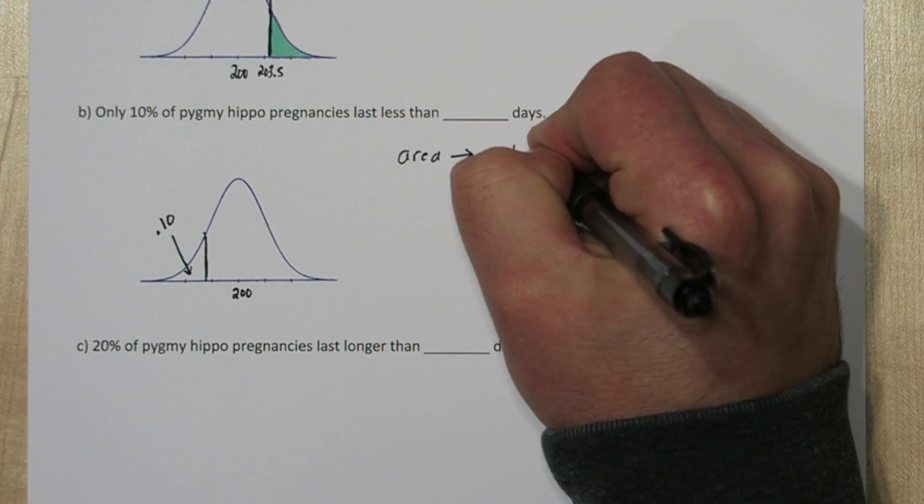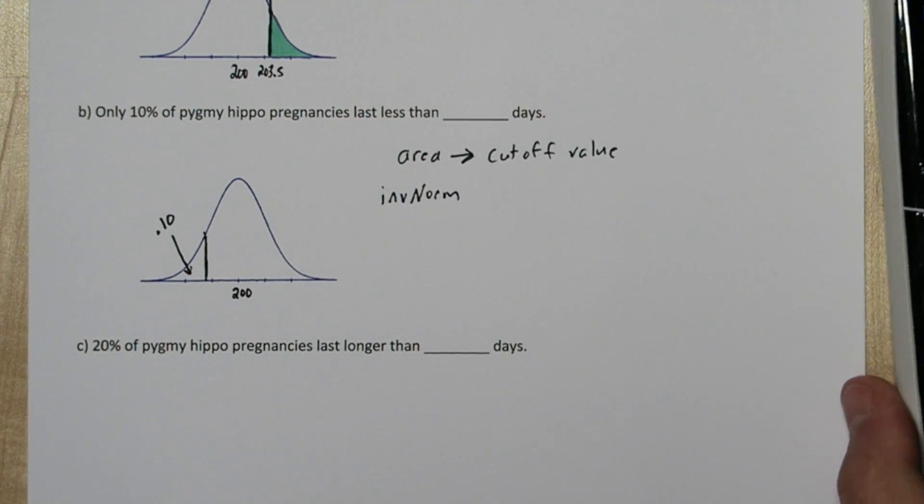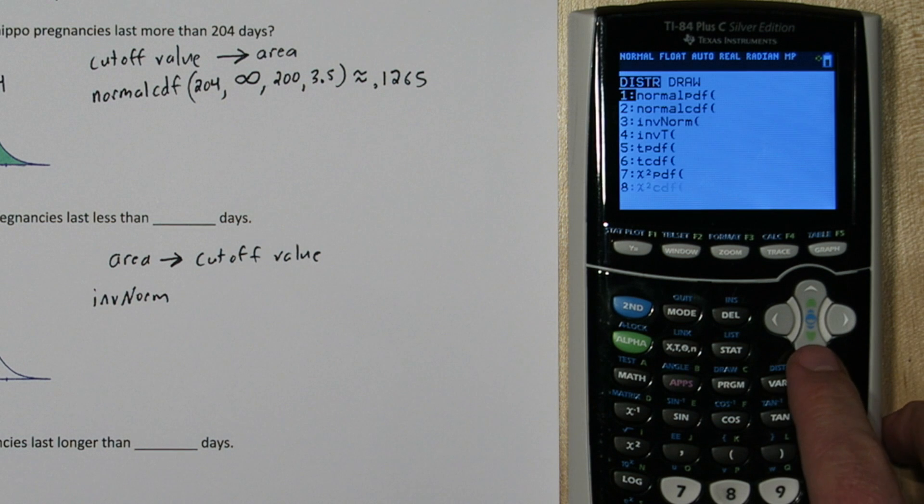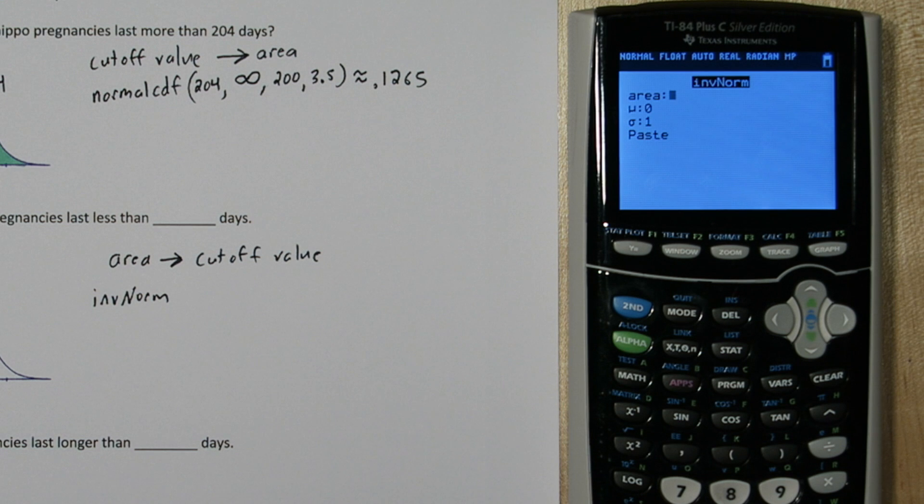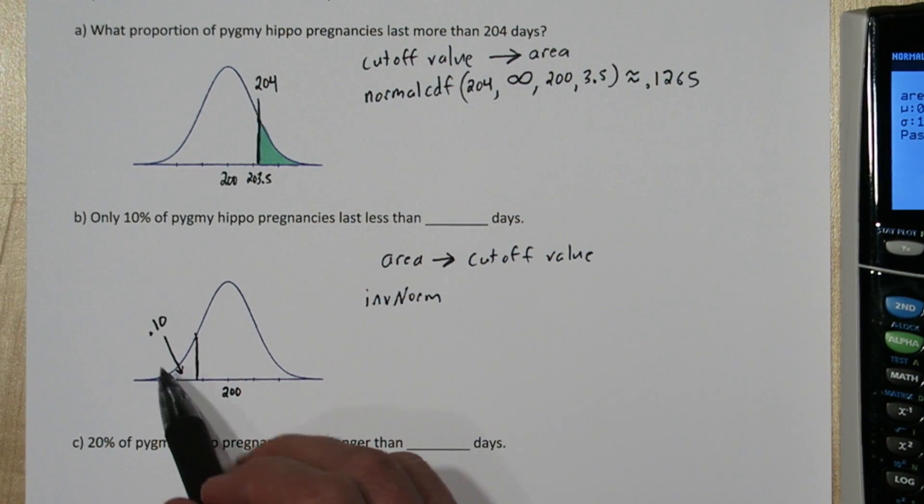So if you have area, and you're trying to figure out what the cutoff value is, use inverse norm on the calculator. To access it, press 2nd, Vars. This is our distribution menu again. And we'll go down to inverse norm, and it says what area do you have? Now our area is 10%.